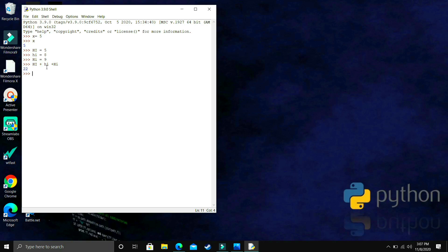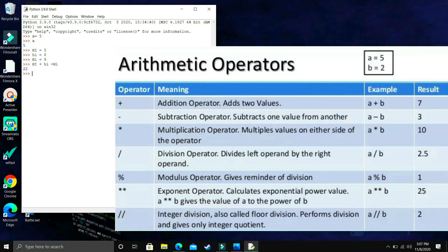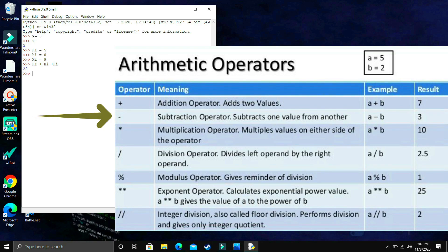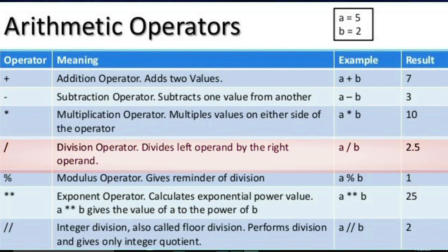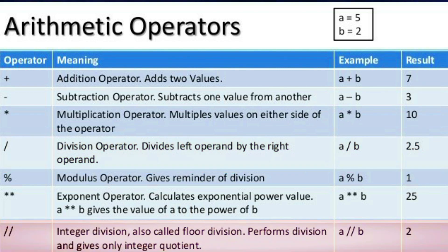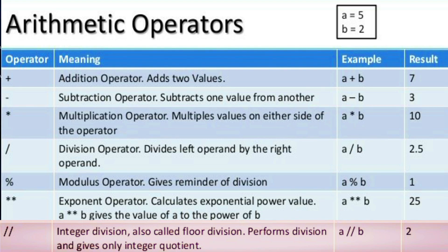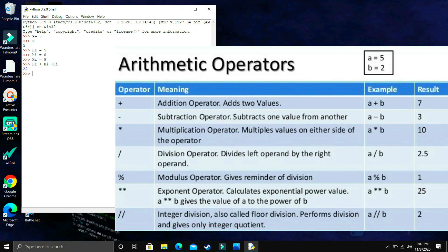Now let's talk about arithmetic operators. We have variables a = 5 and b = 2. The addition operator gives 5 + 2 = 7. The subtraction operator gives 5 − 2 = 3. The multiplication operator uses the asterisk sign: 5 × 2 = 10. The division operator with a single slash gives a decimal value — 5 ÷ 2 = 2.5. Integer division uses two slashes and returns an integer value instead of a decimal, which can be handy in various situations.